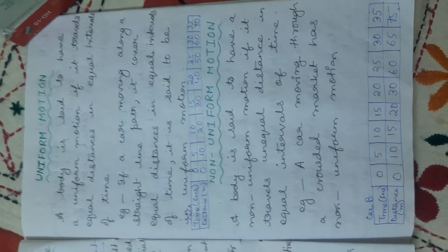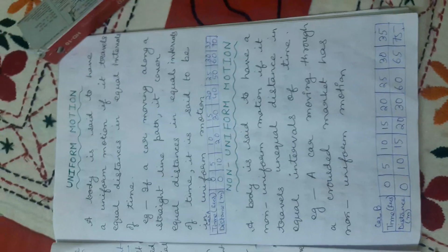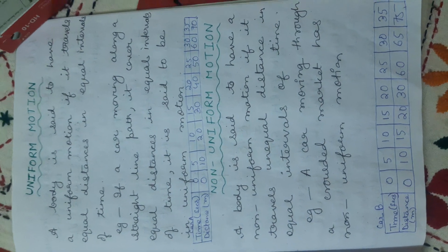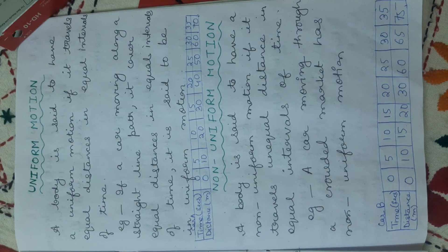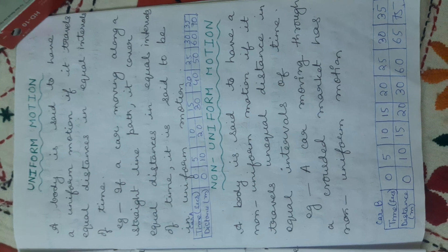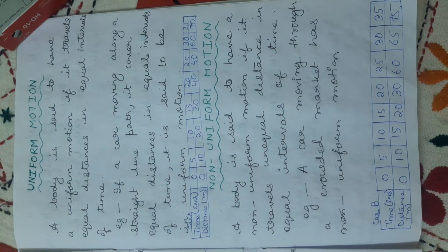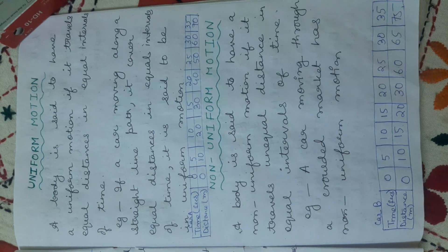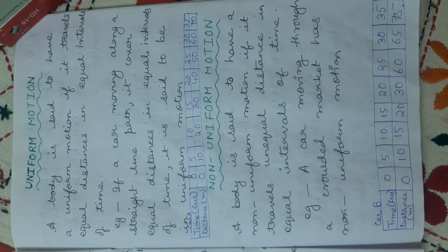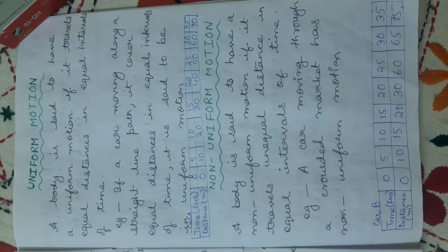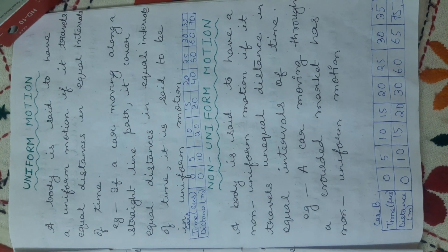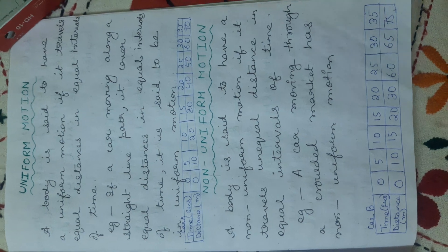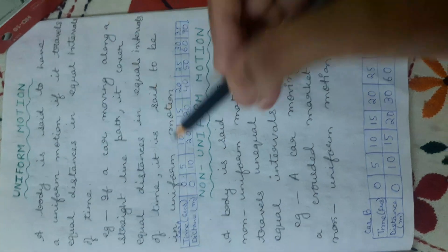A body is said to achieve uniform motion when it covers equal distance in equal intervals of time. For example, suppose a car moving in a straight line path — if it covers equal distance in equal intervals of time, then only we can say that the car is in uniform motion.